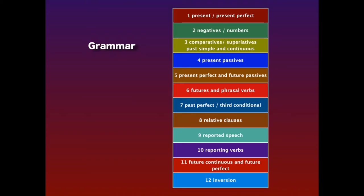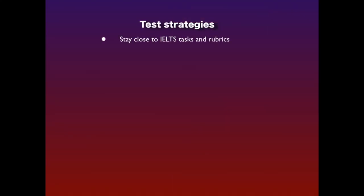In level 2, we start by revising present and present perfect tenses, go on to negatives and numbers, then revise comparatives and superlatives, revise past tenses, revise present passives, and then move on to present perfect and future passives, futures, past perfect, third conditional, relative clauses, reported speech, reporting verbs, future continuous, and finally inversion.